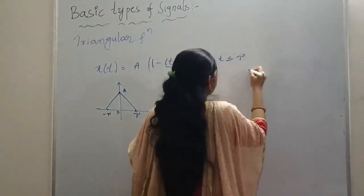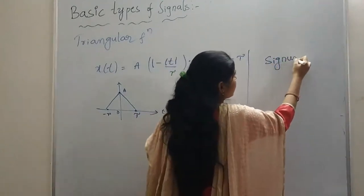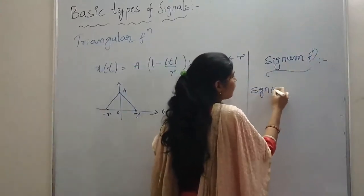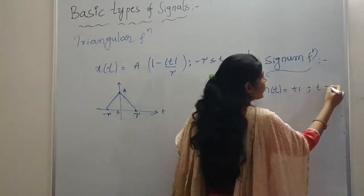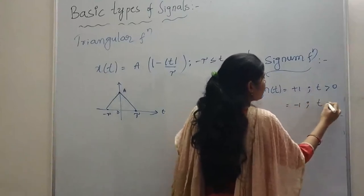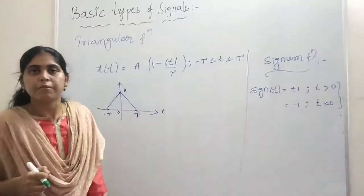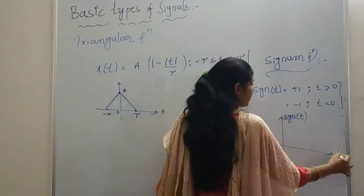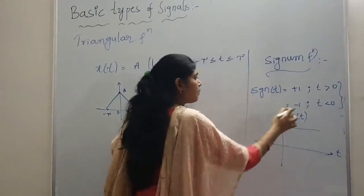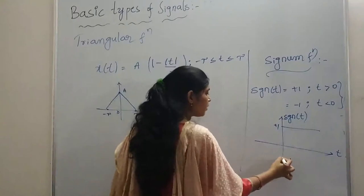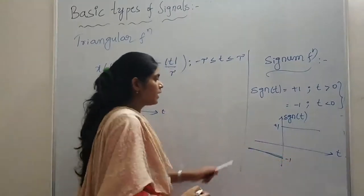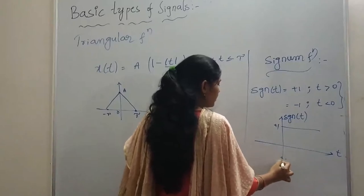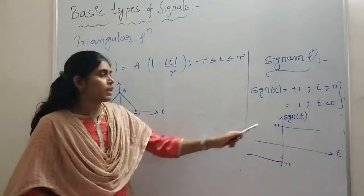The next type of signal is the signum function, represented as signum of T. Its amplitude is plus 1 for T greater than 0, and minus 1 for T less than 0. Graphically, for T greater than 0 it is a straight line at plus 1, and for T less than 0 it is a straight line at minus 1 (third quadrant). This is the graphical representation of signum of T.